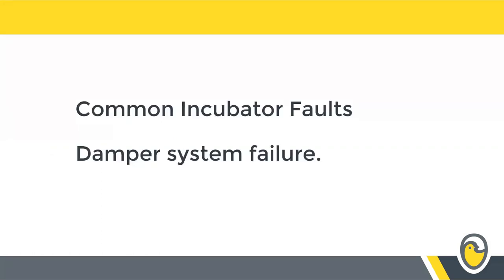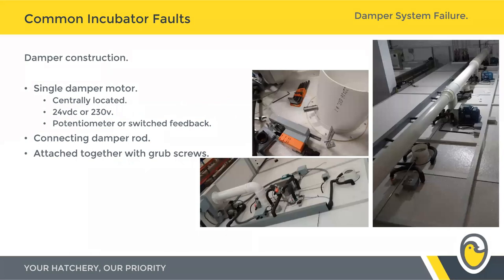We're going to spend the next couple of minutes looking at damper system failures. It's worth going into the construction of the damper system and ventilation system on an individual incubator first. On the vast majority of our incubators, all the dampers on the machine are controlled by one single damper motor centrally located. That motor is going to be either 24 volts or 230 volts. All our recent incubators for the last eight to nine years have all been 24-volt low voltage DC actuators. Older machines, going back around 30 years, have 230-volt high voltage damper motors — so bear that in mind when ordering spares.